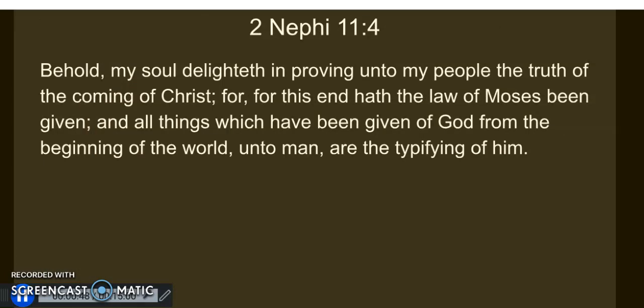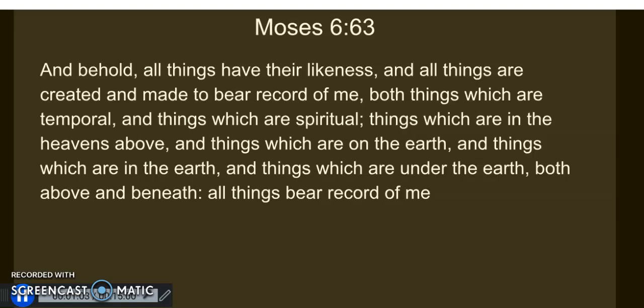The Book of Mormon peoples understood this. They understood that the law of Moses was a law of performances and ordinances, but most of all they understood that all things given of God in that law were the typifying of Christ. And we learn in Moses chapter 6, verse 63, that all things have their likeness, and all things are created and made to bear record of me — both things which are temporal and things which are spiritual.